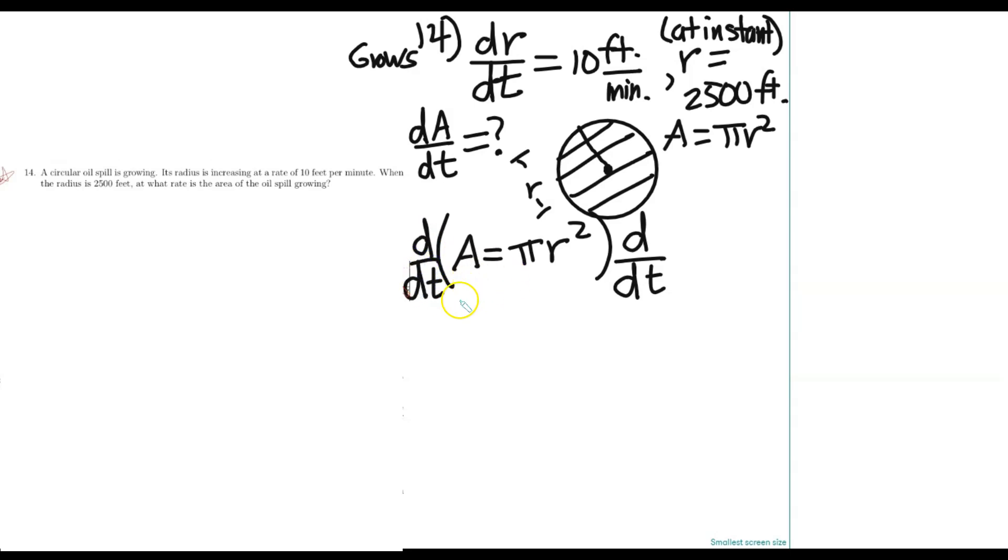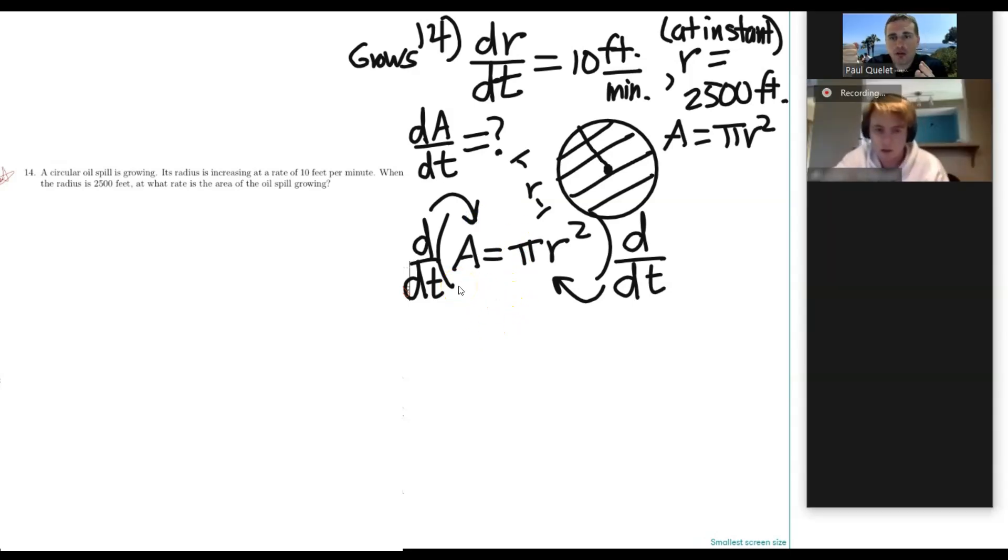Notice, D over DT is an operator. It hits this guy, and it hits this guy. So when it hits something, think about a derivative like a hammer. Bam, hits something. If it hits something, and that something is not the same variable, like R is not T, and nor is A T. So given that A is not time, and R is not time, you have to think about implicit derivatives, which I know you and I worked on just for one problem yesterday. That's because A area can be a function of time. And R, the radius, can be a function of time. So we have to think about implicit derivatives.